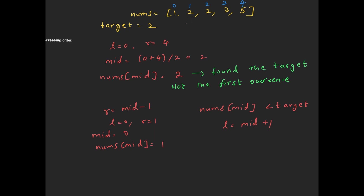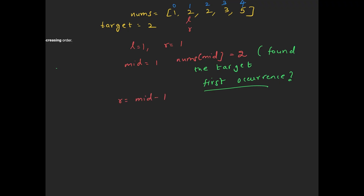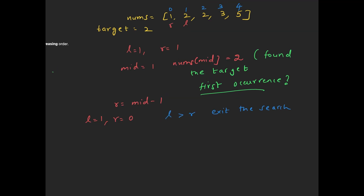Now the left pointer is at index 1 and the right pointer is also at index 1. The mid is 1 and the value at this index is 2. We have found the target again, but we still need to verify if it is the first occurrence. So we continue by shifting the right pointer to mid minus 1, which moves the right pointer to index 0. At this point, the left pointer is at index 1 and the right pointer is at index 0. Since the left pointer is greater than the right pointer, we know the search is complete. We exit the search and notice that the left pointer is now at the first occurrence of the target.